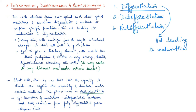During differentiation, cells undergo various structural changes both in the cell wall and protoplasm. For example, if a cell has to form a tracheary element, the cells would lose their protoplasm and develop a very strong, elastic, lignocellulosic secondary cell wall to carry water to long distances even under extreme pressure and tension. In order to perform specific functions, the anatomical features change in terms of the cell wall and the protoplasm. This is differentiation.